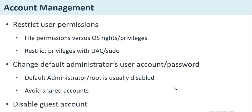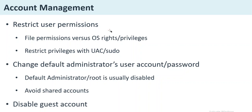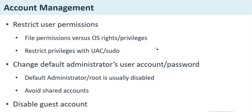When it comes to account management, restrict user permissions. In most companies, you are only given permissions to the files and folders you need to do your job — this is part of what is called least privilege. Permissions refer to files and folders. When it comes to the operating system itself, we talk about rights and privileges. For example, you may not have the right to change the system time — the correct terminology is rights and privileges, not permissions.